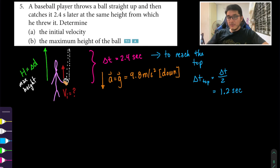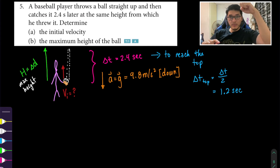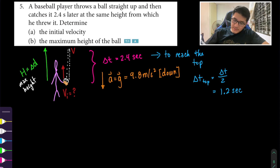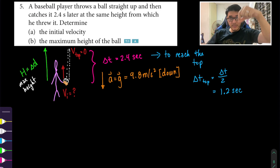Another key piece of information — not stated in the question but something you must know in physics: whenever an object reaches maximum height, it is momentarily at rest. So the velocity at the top, v_final or v_top, equals zero before it comes back down.